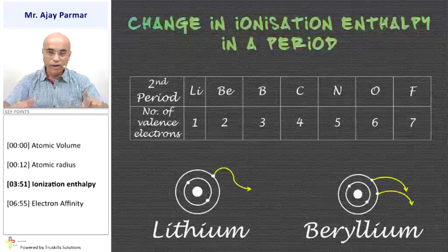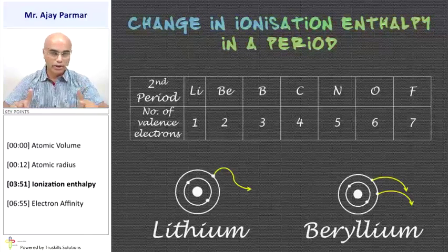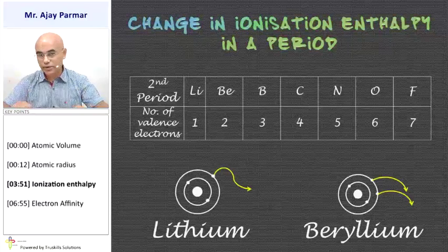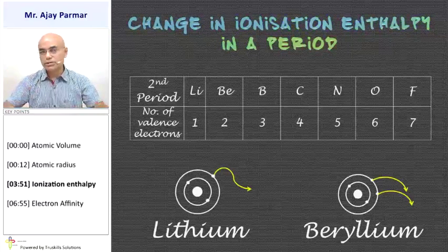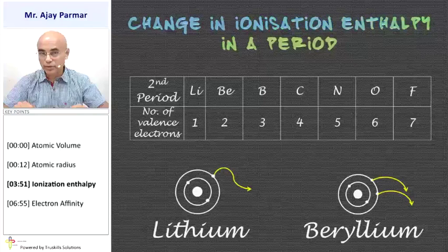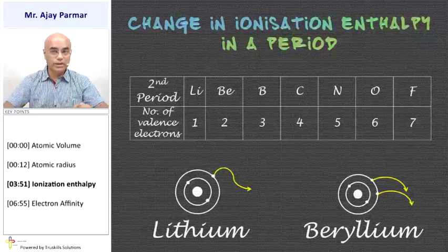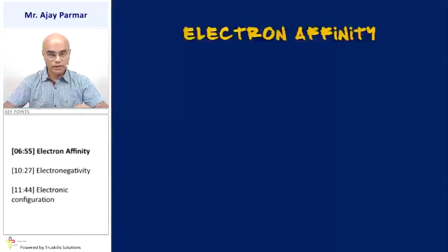Factor number two: in lithium, it has to lose only one electron, whereas in beryllium it has to lose two electrons. So once again, the energy required will be more and therefore ionization enthalpy in a given period also increases.